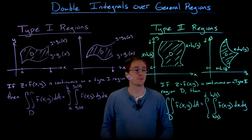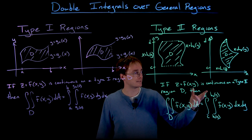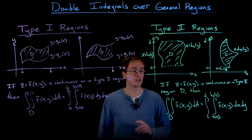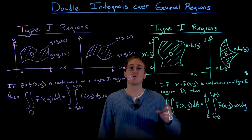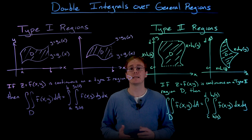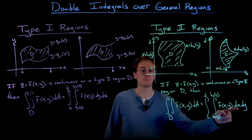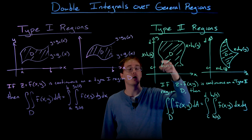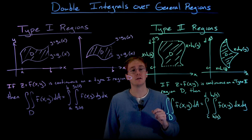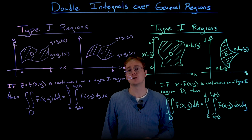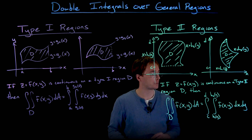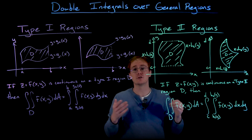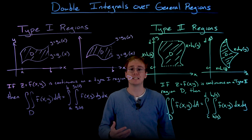For a type 2 region, if f(x, y) is continuous over d, the double integral is expressed as an iterated integral where the innermost integral is with respect to x, from the leftmost curve h1(y) to the rightmost curve h2(y). The outer integral then integrates with respect to y, with y running from the bottom value c to the top value d for the region.